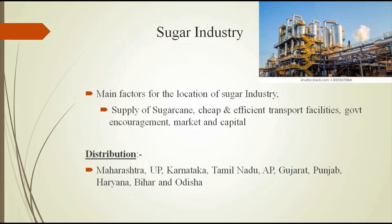Next is sugar industry. The main factors for the location of sugar industry is the supply of sugarcane, because sugar industries are concentrated very near to sugarcane fields. The main reason is that sugarcane is a weight-losing and perishable raw material — after harvest you cannot keep it for long, and the liquid inside will become dry. So most sugar industries are located very near to sugarcane fields. Other factors include cheap and efficient transport, government encouragement, market, and capital.